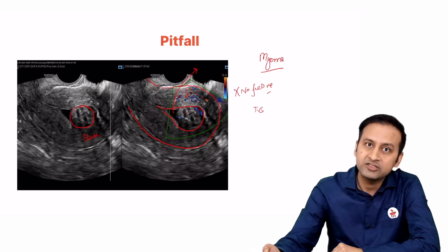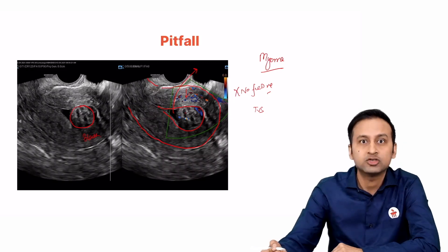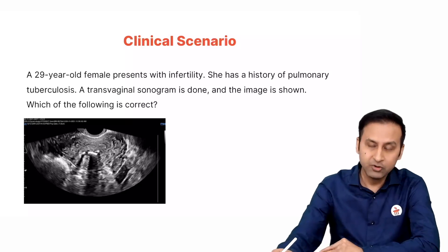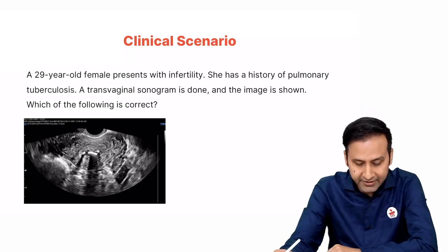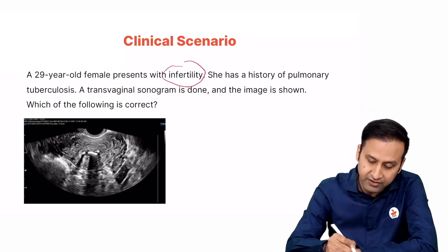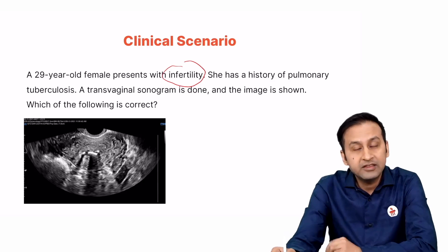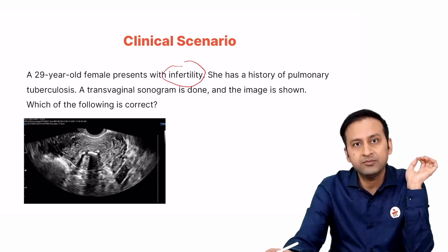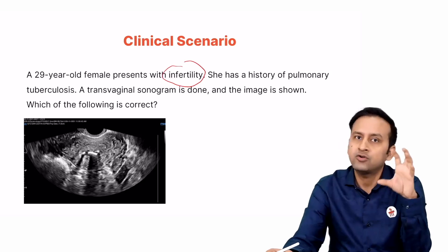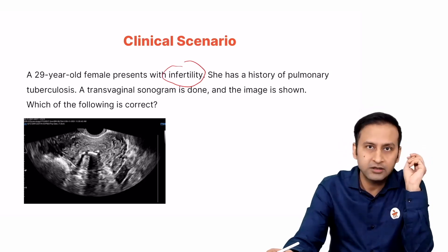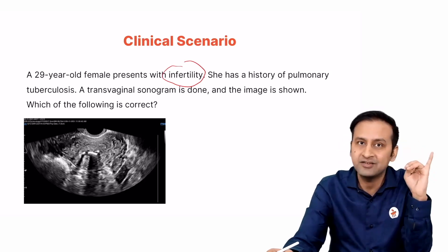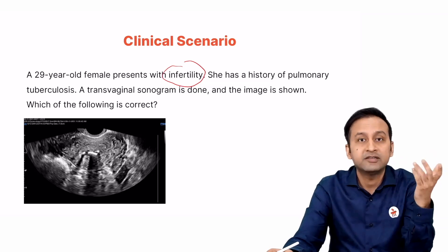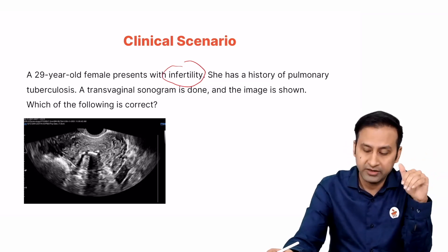Remember: because this submucosal myoma is located within the endometrial cavity, it can be associated with menorrhagia and infertility as well. Moving to the next clinical scenario: there is a 29-year-old female presenting with infertility. When there is pathology in the endometrium, implantation cannot occur, so patients with endometrial pathologies present with two major symptoms — infertility and menorrhagia or abnormal menstrual bleeding, sometimes hypomenorrhea.